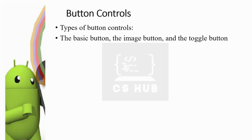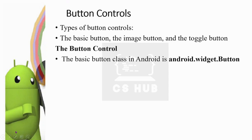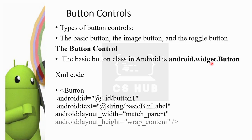The basic button is a class in Android. You can place the button in the user interface. The button is a class in Android, and this is the text parameter for that class.